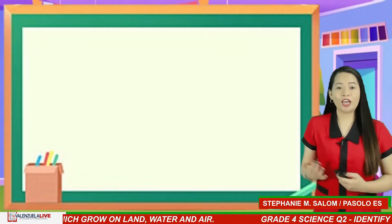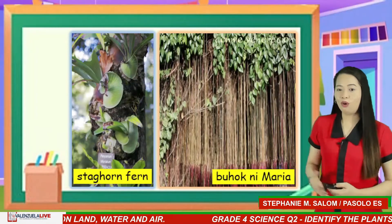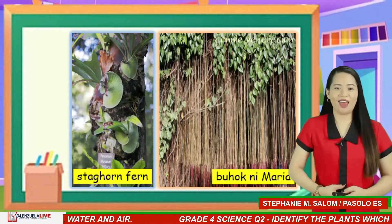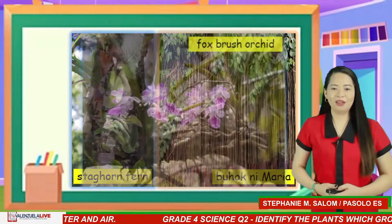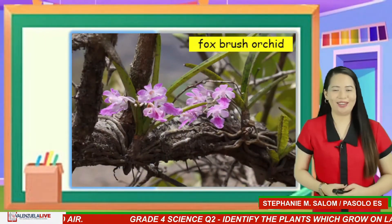Examples of epiphytes are staghorn fern, buhok ni Maria, and the fox brush orchid.